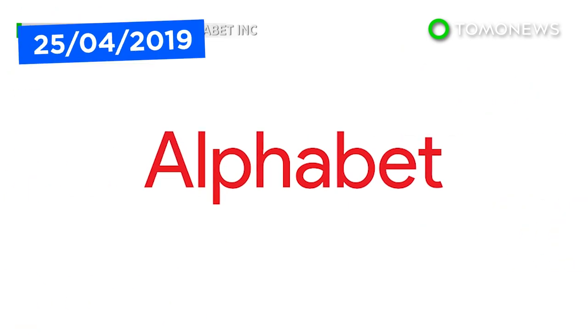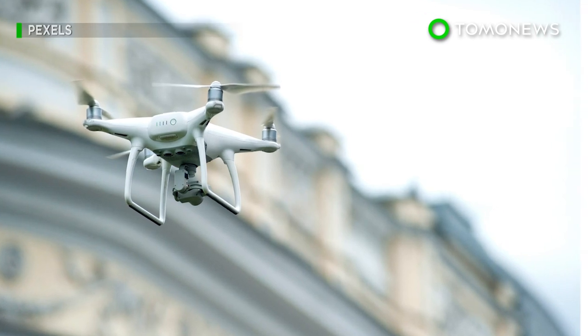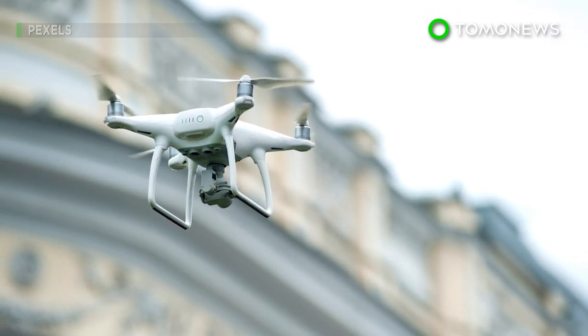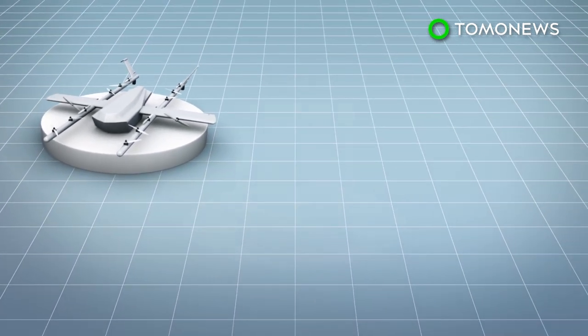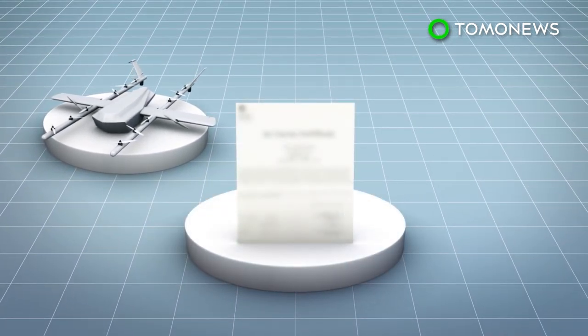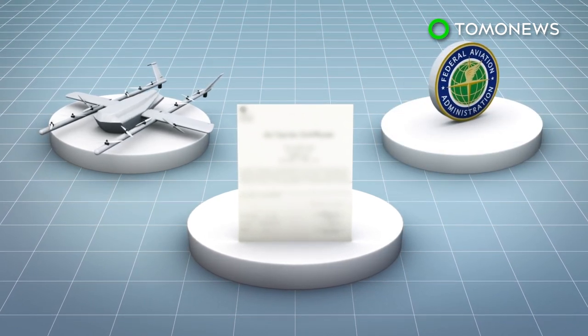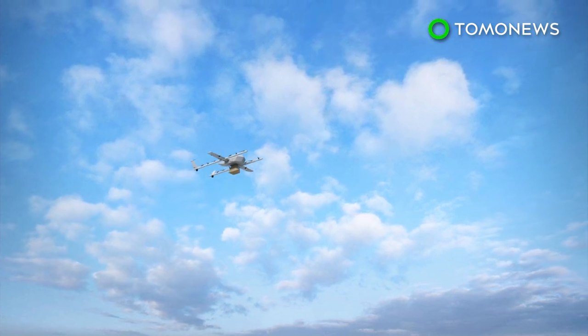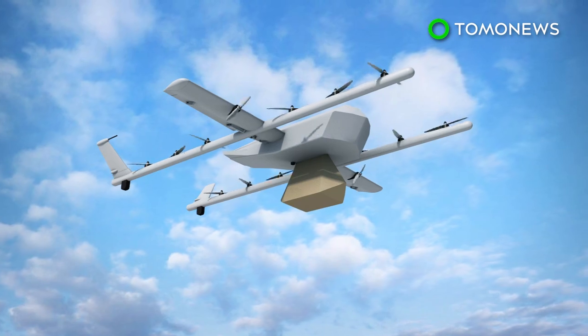Alphabet-owned Wing has now become the first company in the U.S. to get approved by the Federal Aviation Administration to use drones for delivering goods. According to a Medium blog post by Wing, the delivery firm has officially become the first drone company to receive an air carrier certification from the Federal Aviation Administration in the U.S. The blog post went on to explain that the certificate would allow them to start a commercial service of delivering goods to American homes.